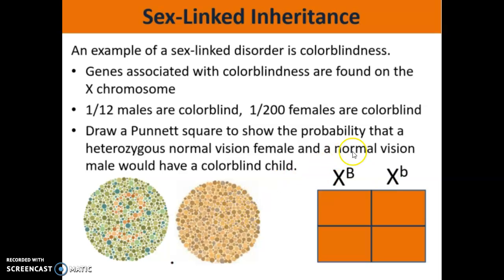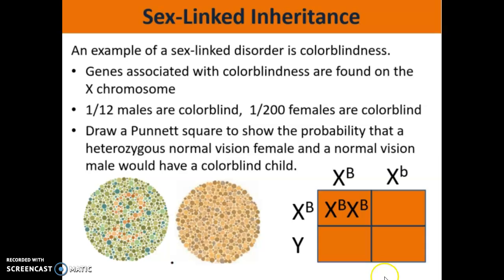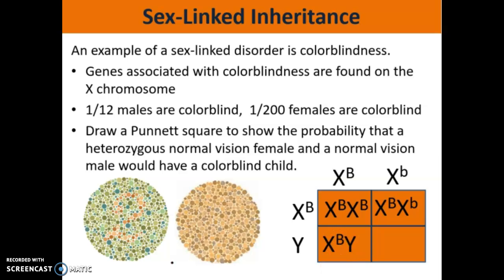The male has normal vision, so we put his sex chromosomes on their side — he is XY, and since he has normal vision, we put a big B next to his X. We can go ahead and fill in the Punnett square. The first box is a completely normal vision female. The next box is a female that is normal vision but a carrier for colorblindness. At the bottom, we have a son who's normal vision, just like the father.